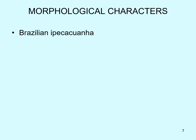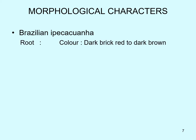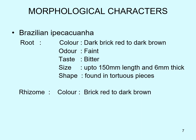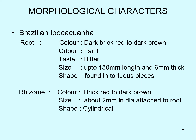Morphologically, the two Ipecac species were first obtained from Brazil, known as Brazilian Ipecac. The roots have a color of dark brick red to dark brown, with a faint odor and bitter taste. Size is up to 150 mm in length and 6 mm thick. Shape is tortuous and in pieces. Rhizomes are brick red to dark brown, about 2 mm in diameter, and cylindrical in shape.